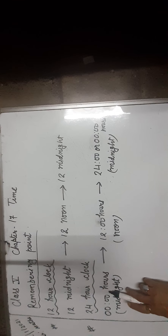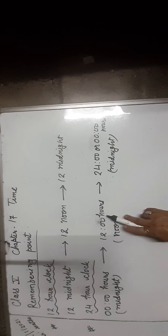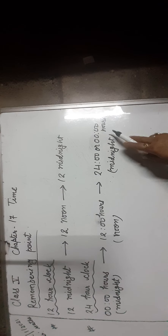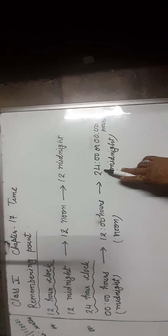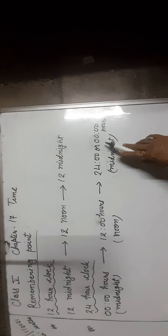In the 24-hour clock, a day ends at 12 midnight and a new day begins at the same time. It never repeats the time. We write midnight as 00 hours, noon as 12 hours, and midnight as 24 hours or 00 hours. Midnight is called 24 hours if used for the end of the day, and 00 hours if used for the beginning of the day.